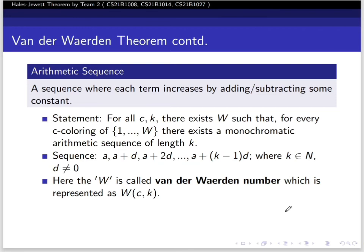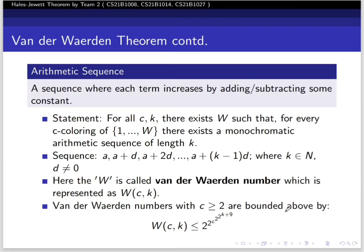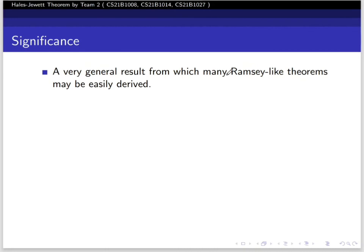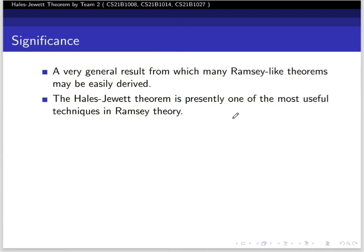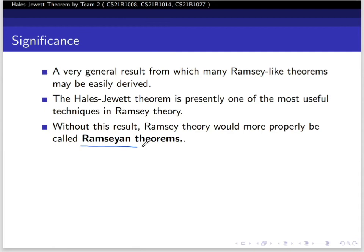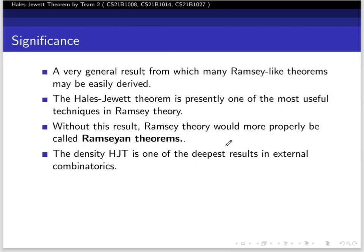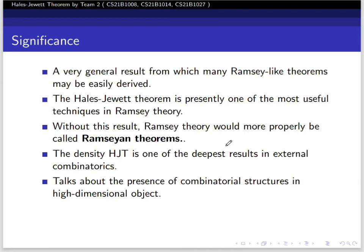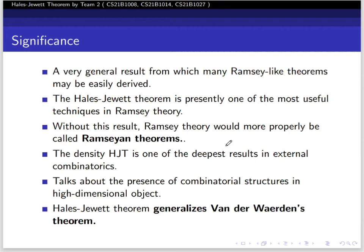The w is called the van der Waerden number, represented as W(c,k). Van der Waerden numbers can be obtained for c=2. The proof can be given by HJT. The significance of HJT is that it's a very general result from which many Ramsey-type theorems may be easily derived. The Hales-Jewett theorem is presently one of the most useful techniques in Ramsey theory. The density HJT is one of the deepest results in extremal combinatorics. HJT generalizes van der Waerden theorem and is generalized by Graham-Rothschild theorem.